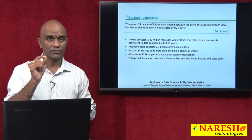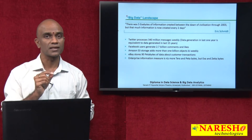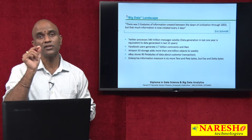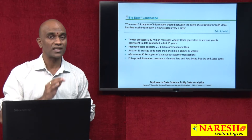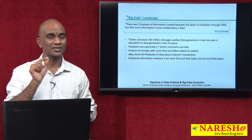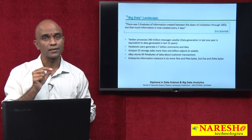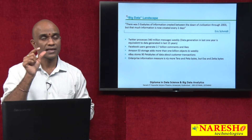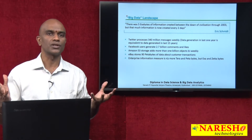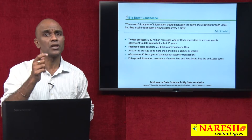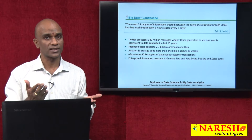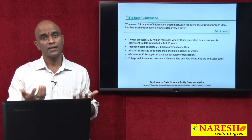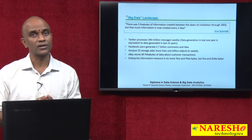If we closely observe that statement — the fact that every two days we are generating that amount of data — it refers to the speed and rate at which we are generating data, which is exponentially huge. That is the velocity, which is generally referred to as the second V. The first V is volume, and the second V is velocity.